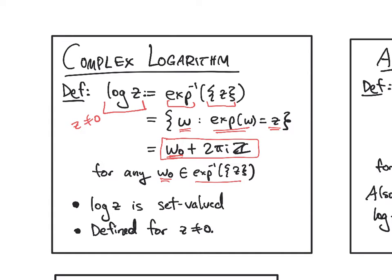So log z, or lowercase log, is set-valued or multi-valued. We're going to be talking about how, if you restrict the exponential to certain sets, then you can take the inverse function and get an actual function. So when we restrict to particular pre-images, we will get a function on certain sets.